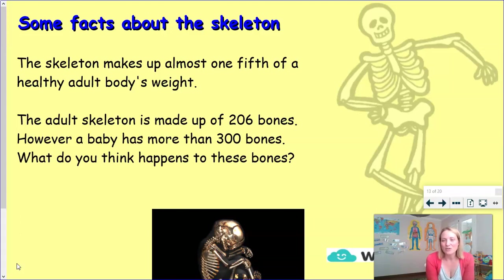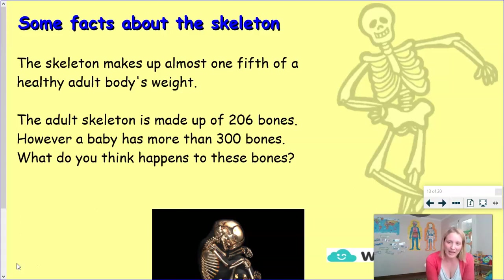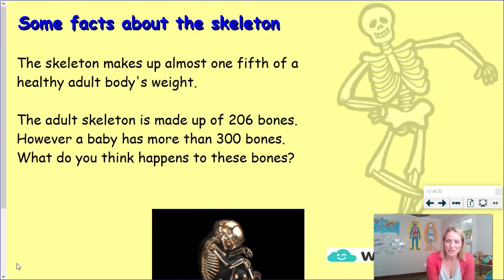An adult skeleton is made up of 206 bones. However, a baby when they're born has over 300 bones. What do you think happens to those bones? We don't spit them out — what occurs? What happens to those 300 bones for them to turn into 206 as you grow up?